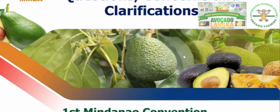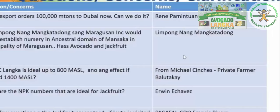Questions from participants include: export orders for 100,000 metric tons to Dubai — can we do it? That's a challenge to producers. Another participant would like to establish a nursery in the municipality of Maragus for jackfruit. The question raised is: langka is ideal up to 800 meters above sea level — what is the effect if planted at 1,400 meters above sea level?